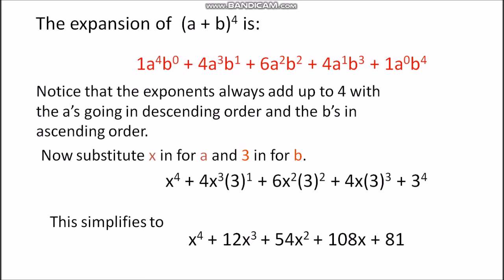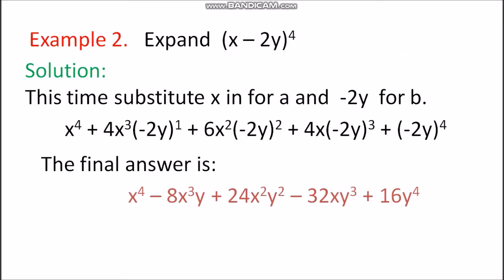Now for an example with a minus term: (x − 2y)^4. Here a = x and b = −2y. Using coefficients 1, 4, 6, 4, 1, the powers of x decrease from 4 to 0 and powers of −2y increase from 0 to 4. Solving gives: x^4 − 8x^3·y + 24x^2·y^2 − 32x·y^3 + 16y^4.